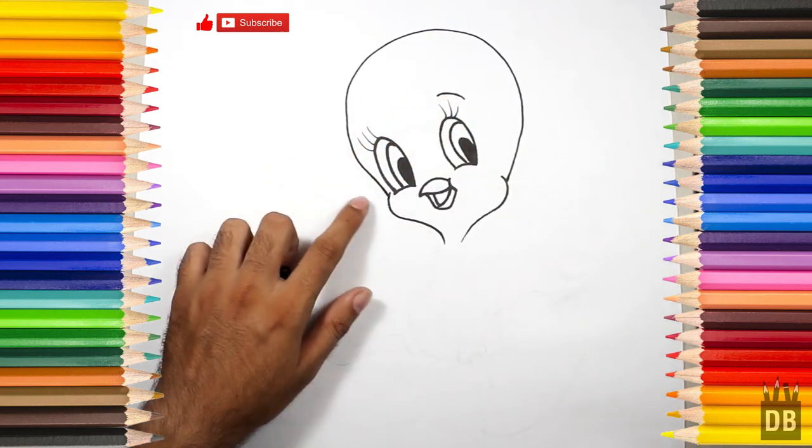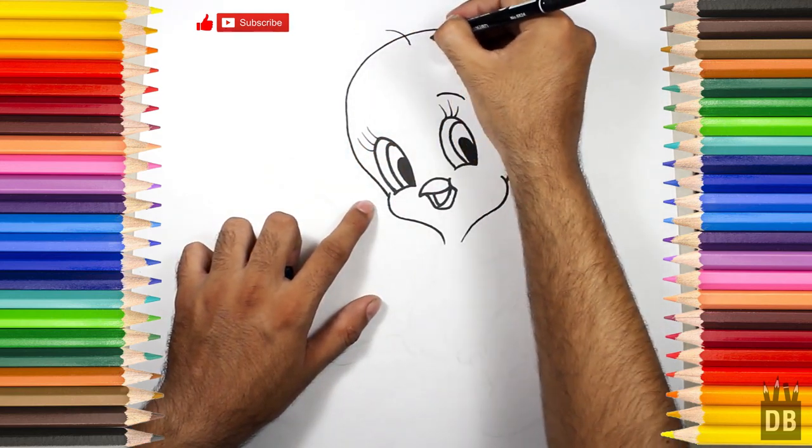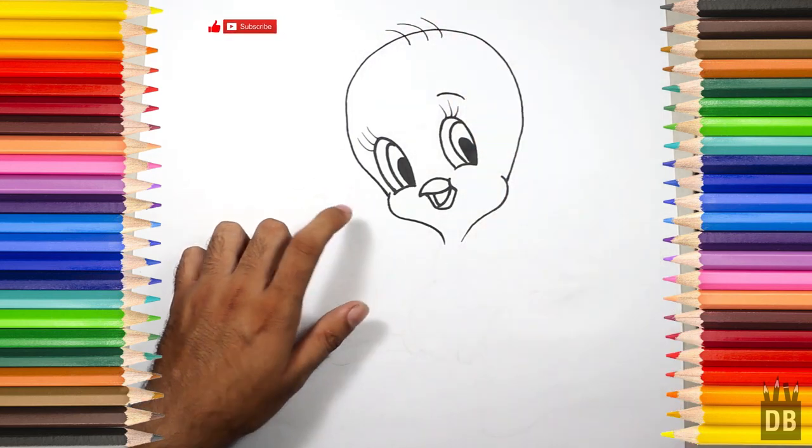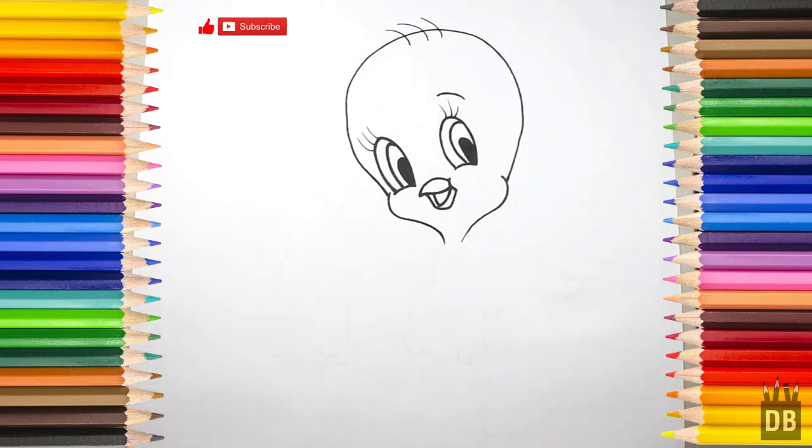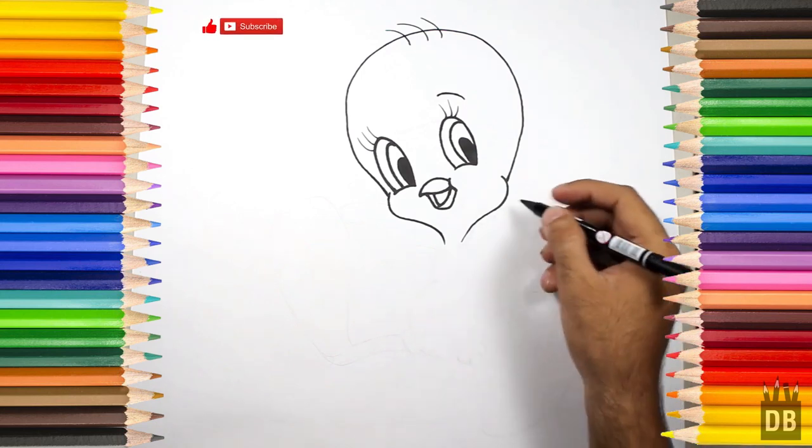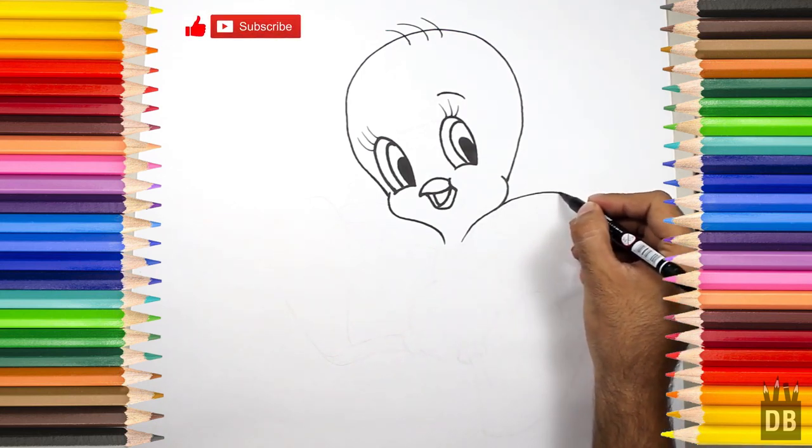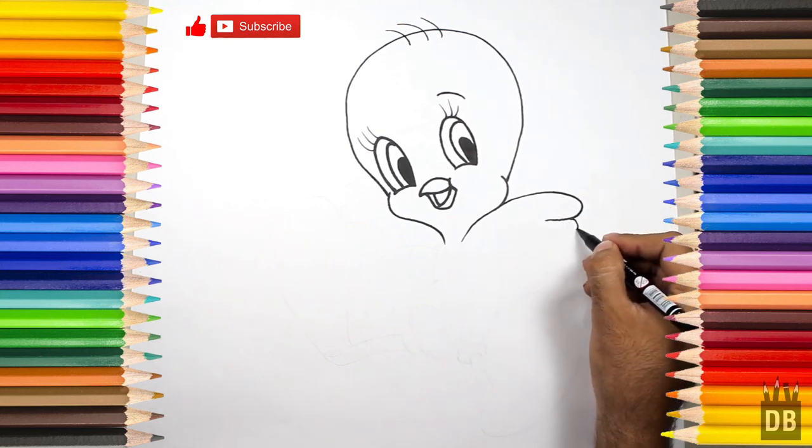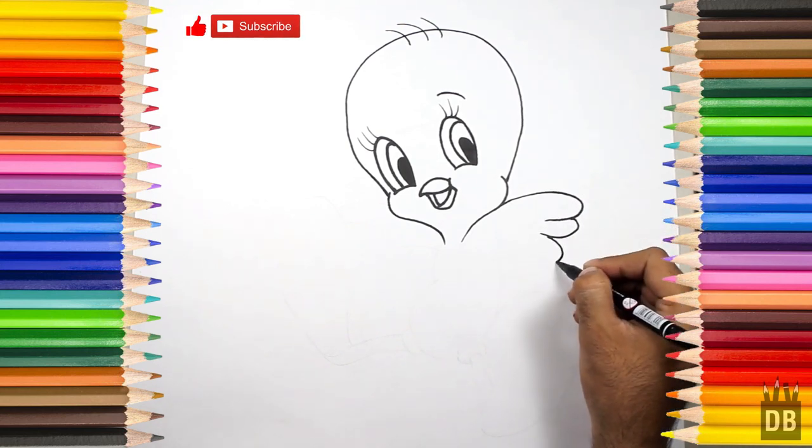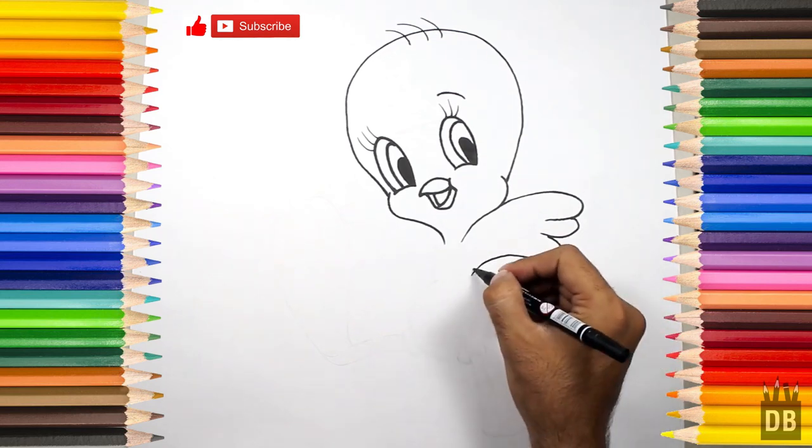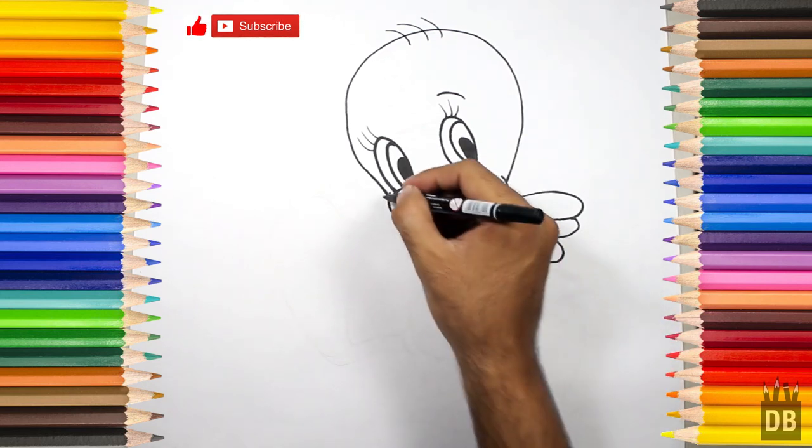Like this and a little here. Now we are going to make the arms or the wings. And the second one.